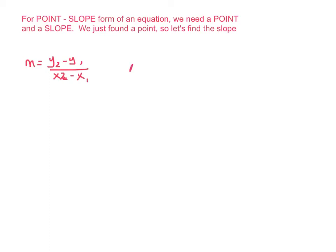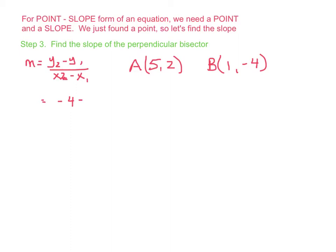We have two points: A at 5 comma 2, and B at 1 comma negative 4. Plugging in, we have negative 4 minus 2 over 1 minus 5. Simplifying: negative 4 minus 2 is negative 6 — not negative 2, so be careful with that arithmetic — and 1 minus 5 is negative 4. Two negatives give a positive, so simplifying, you have positive 3 over 2. Now we have the slope.